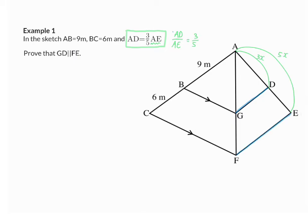This new theorem says that if we know that the two sides of that triangle are in the same proportion, we can say that that line will be parallel to the third side. So we need to get proportions for side AE and side AF and show that they are the same. Because on the right we already have the proportion of AD and AE, on the left I'm going to try and find the proportion for AG and AF, and see whether that is the same.